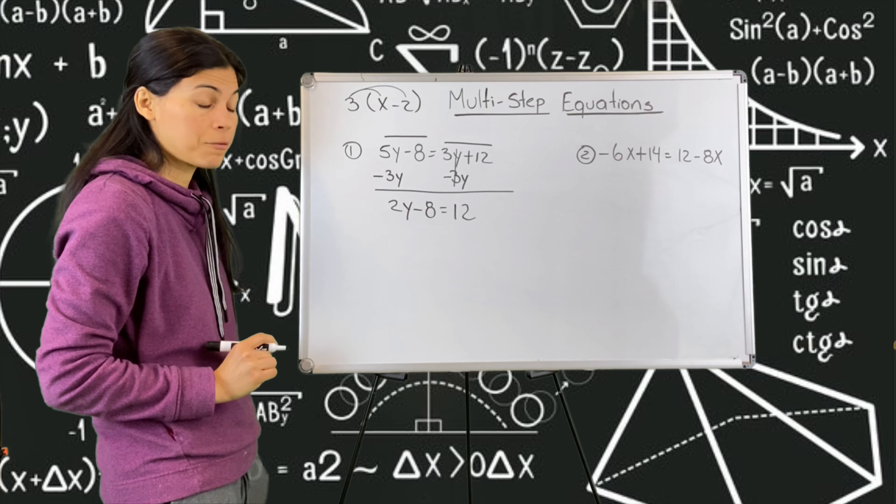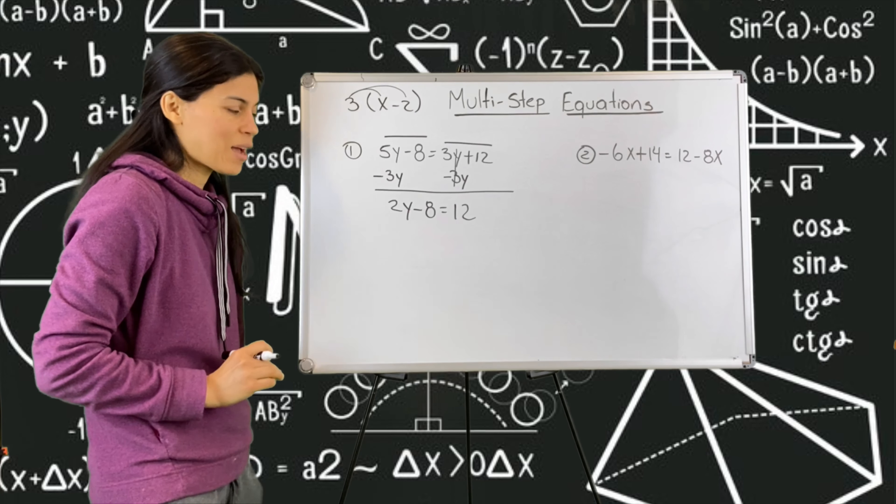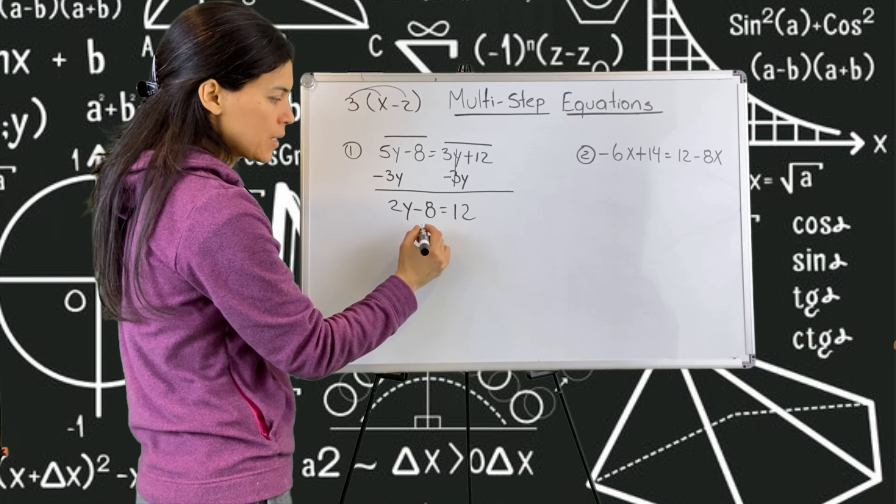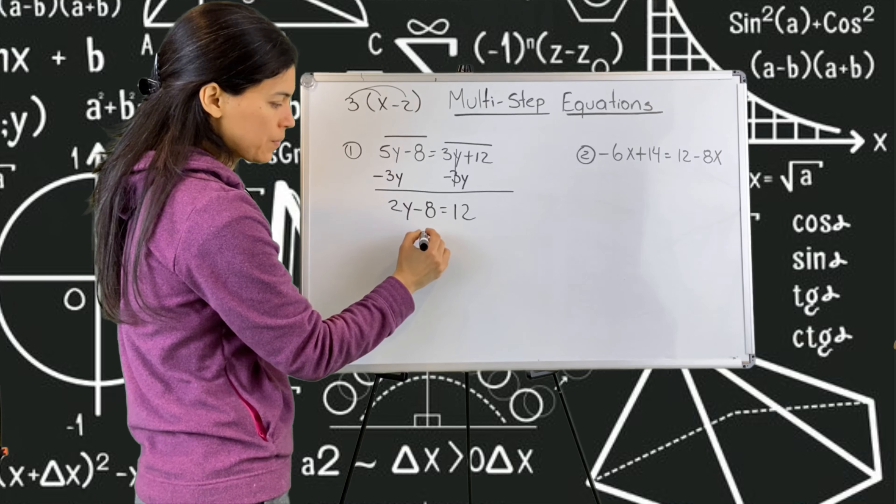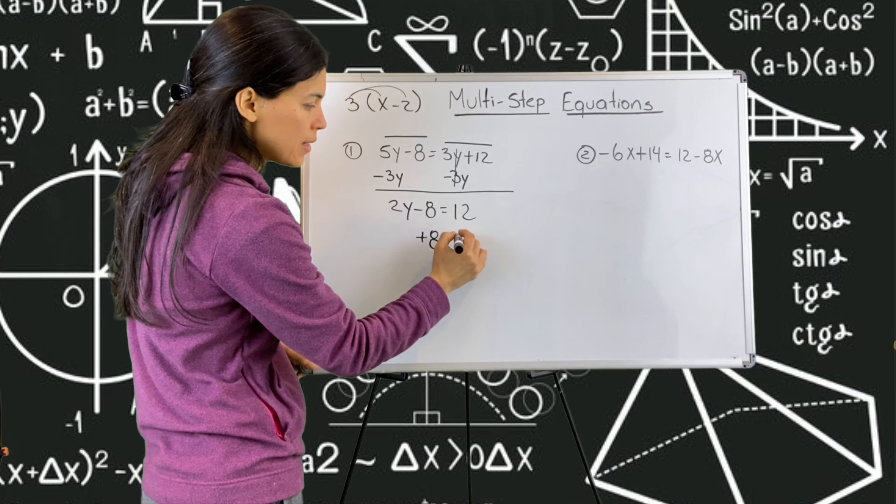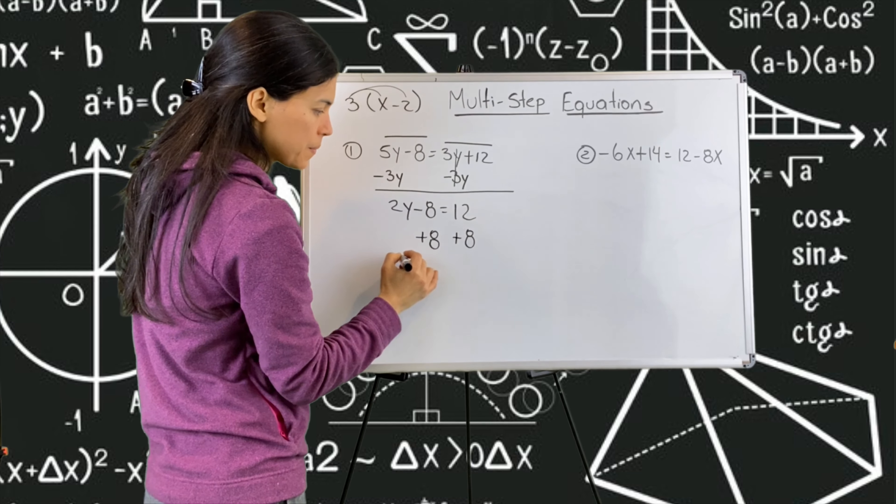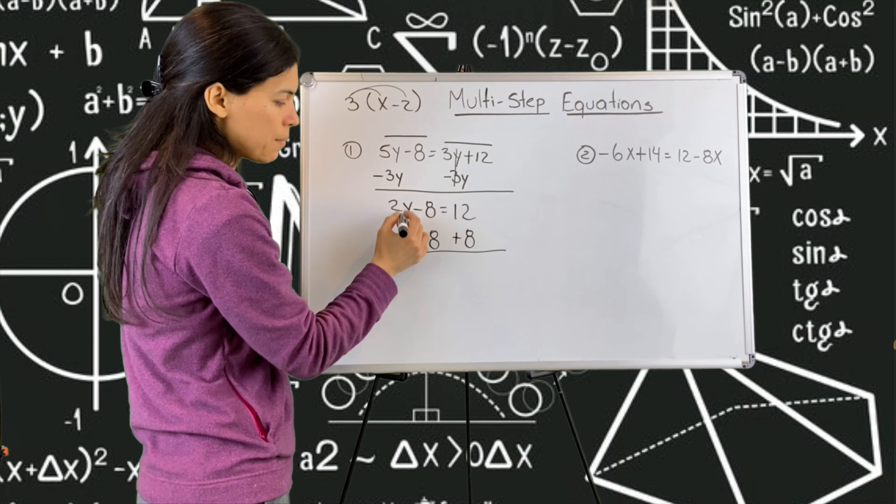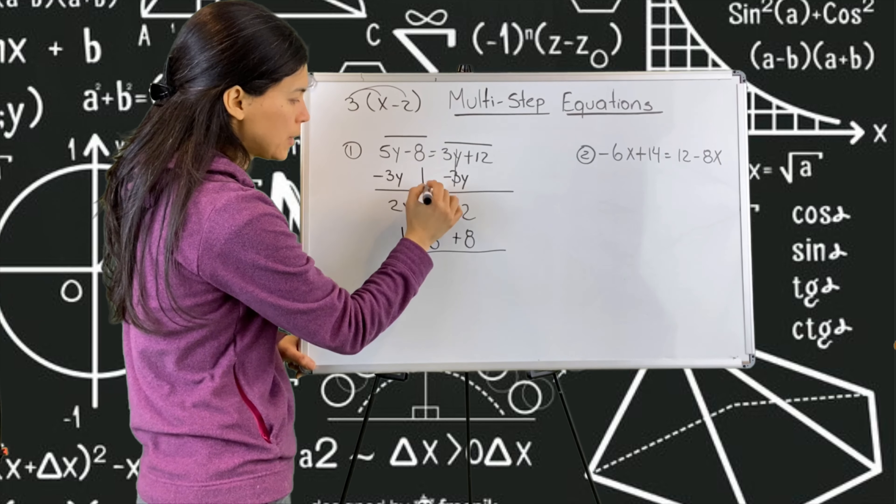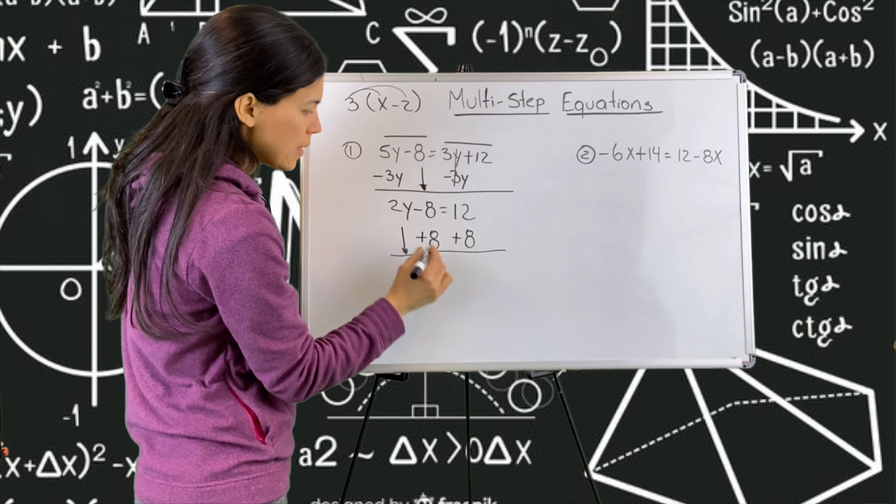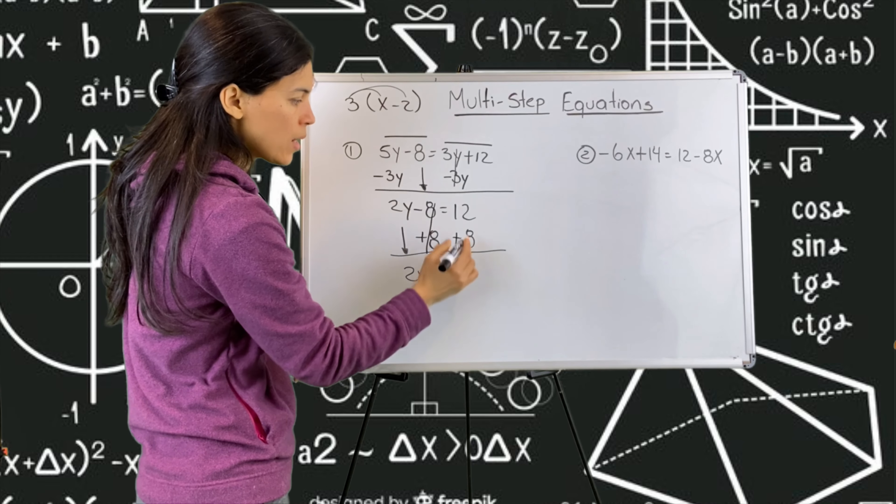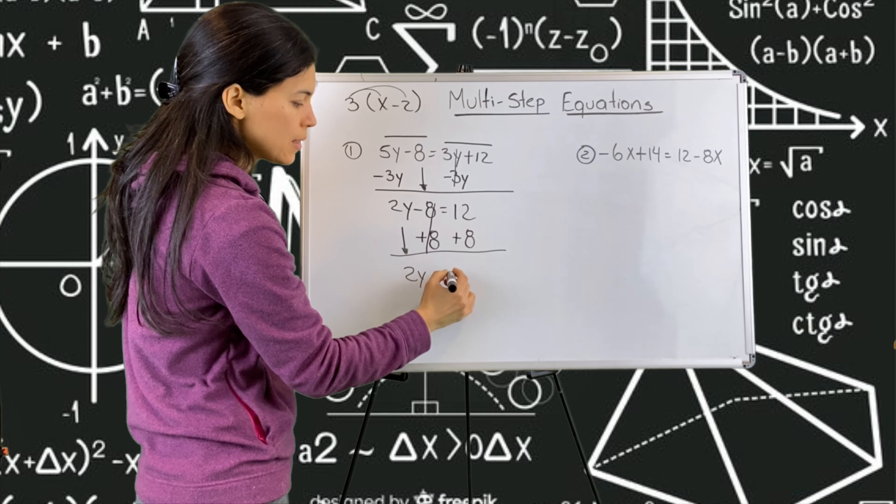Step number four is solve. Now I need to solve for y. Leave y by itself and move everything else to the other side. So I'm going to move this minus eight. The inverse of negative is positive. So I'm going to put plus eight here and plus eight on both sides. I bring down the two y here. So two y minus eight plus eight, they cancel each other, is equal to 12 plus eight. That gives me a 20.